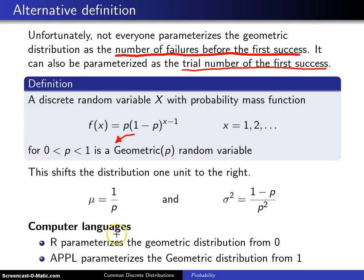Keep in mind that computer languages now have a choice. They either parametrize it with a support beginning at 0 or a support beginning at 1. And it turns out that the R language uses a geometric distribution with its support beginning at 0, whereas APPL has a geometric distribution with a capital G which starts its support at 1. So you always have to pin down whether you are starting the support at 0 or starting the support at 1. The only thing that changes about the distribution in terms of its moments is the mean is going to be 1 larger.